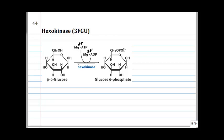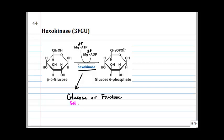We've talked about kinases briefly. They are involved in phosphorylation reactions. Hexokinase in particular can phosphorylate, in an ATP-dependent manner, glucose or fructose. We've said previously that glucose is actually the preferred substrate over fructose. If given a choice, hexokinase tends to phosphorylate glucose much more effectively than fructose. So this is an example of selectivity — it is selective toward glucose.